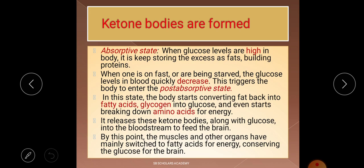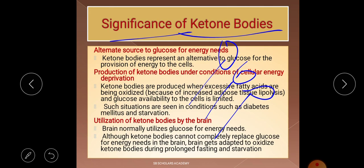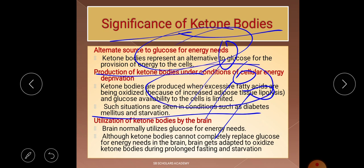In summary: the absorptive state stores energy; the post-absorptive state converts amino acids and fatty acids into energy. Ketone bodies are an alternate source of energy when glucose is unavailable. They are produced under conditions of cellular energy deprivation — body fasting, starvation, or diabetes mellitus — when excessive fatty acids are being oxidized and glucose availability to the cell is reduced.